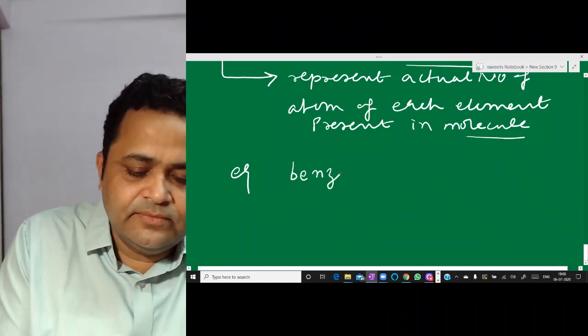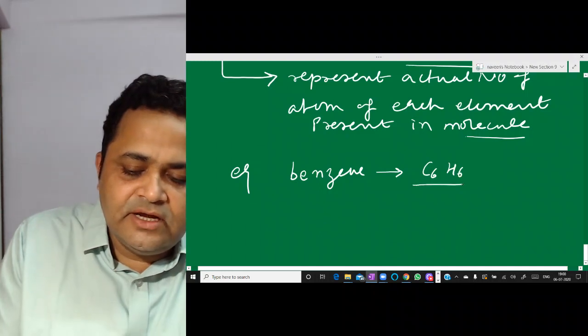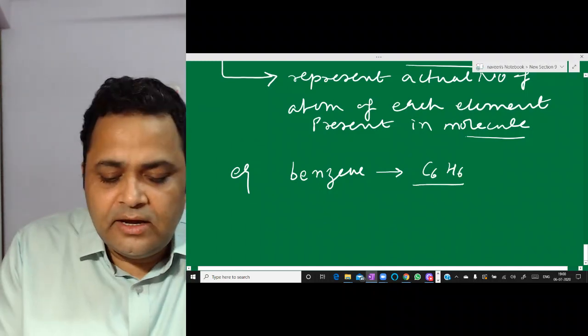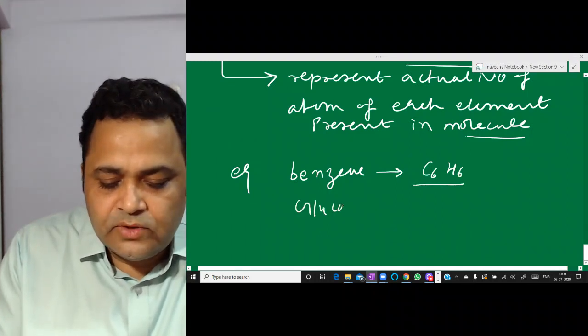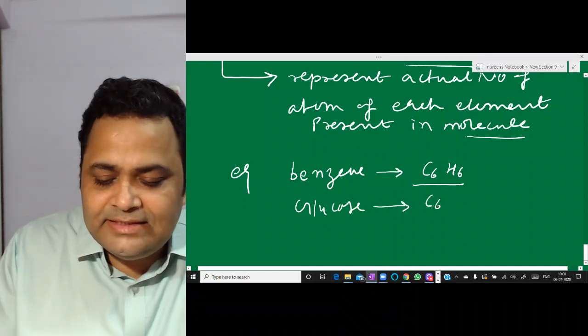For example, benzene has the molecular formula C6H6 — carbon 6, hydrogen 6. And glucose has the molecular formula C6H12O6.